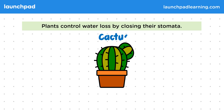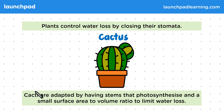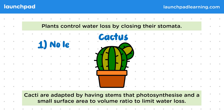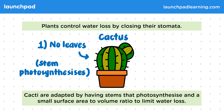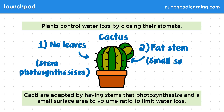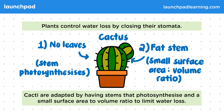This diagram shows a cactus. Cacti have adaptations which allow them to survive in hot, dry environments. Cacti are adapted by having stems that photosynthesize and a small surface area to volume ratio to limit water loss. So cacti limit water loss by not having leaves, and hence the stems photosynthesize. They also have a small surface area to volume ratio which limits water loss, and their stomata only open at night, which helps to reduce water loss.